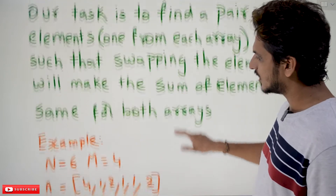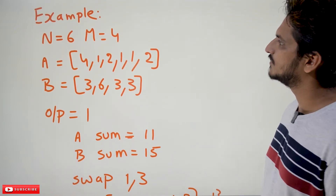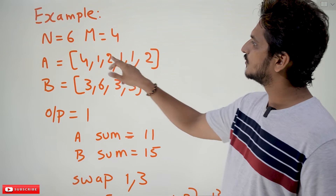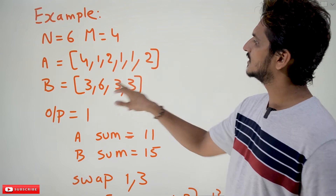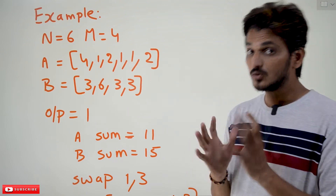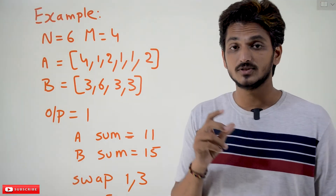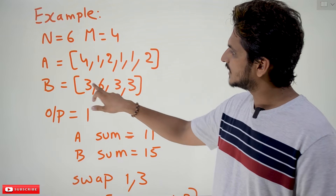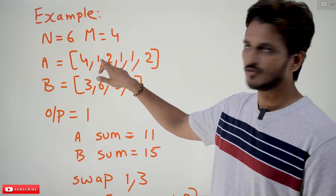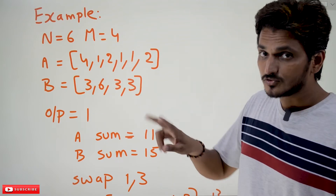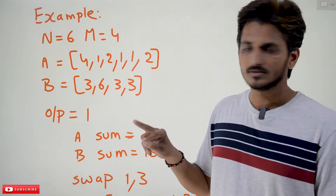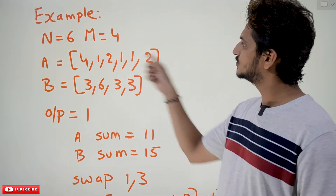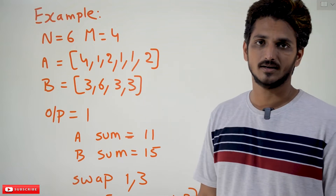With an example we are going to understand it better. n is equal to 6, m is equal to 4, means 6 elements and 4 elements. The elements are A = {4, 1, 2, 1, 1, 2} and B = {3, 6, 3, 3}. We need to identify a pair of elements, one from each array. Suppose if you take 3 from here and 1 from here, and you swap these two elements — place 3 here and 1 here — the summation should be the same for both arrays.